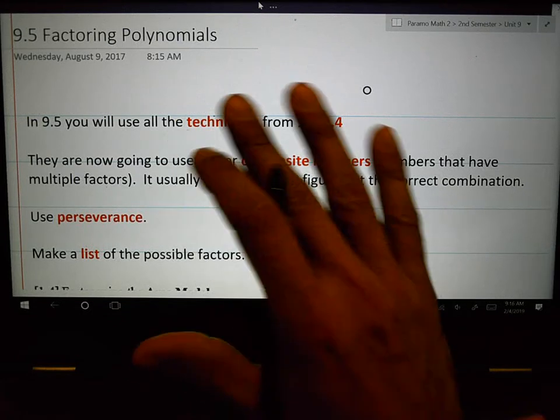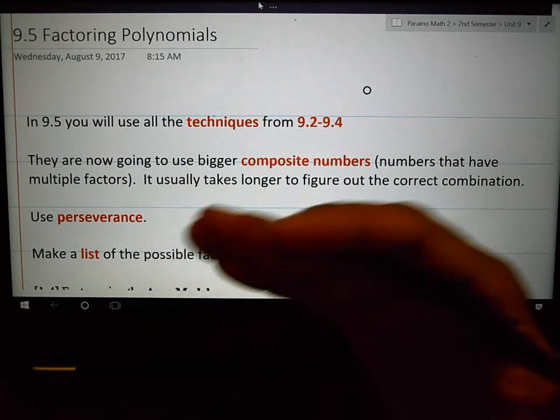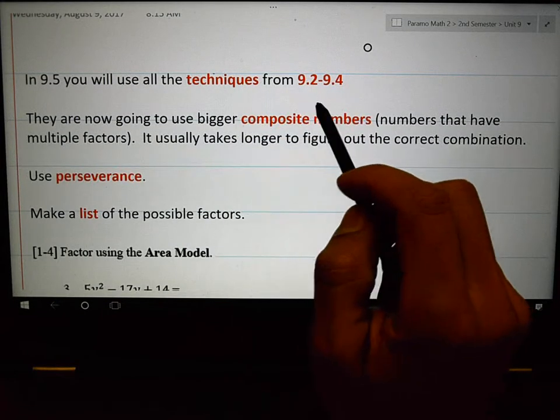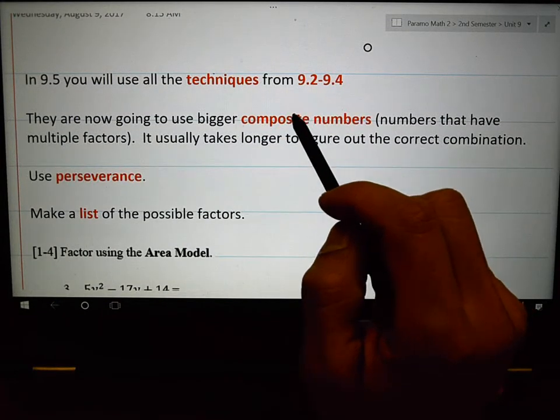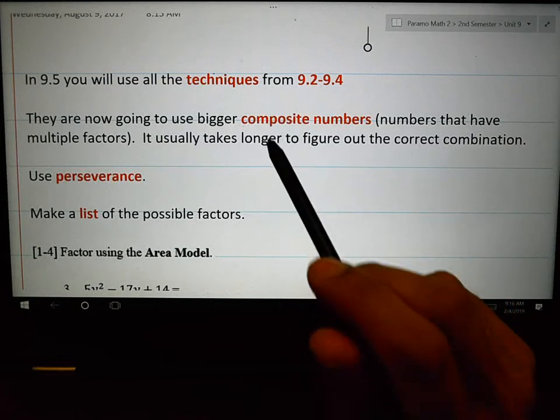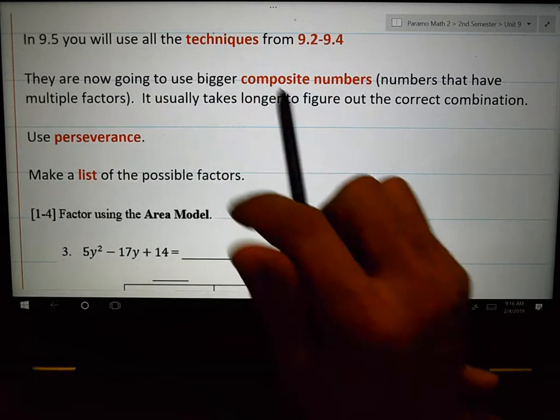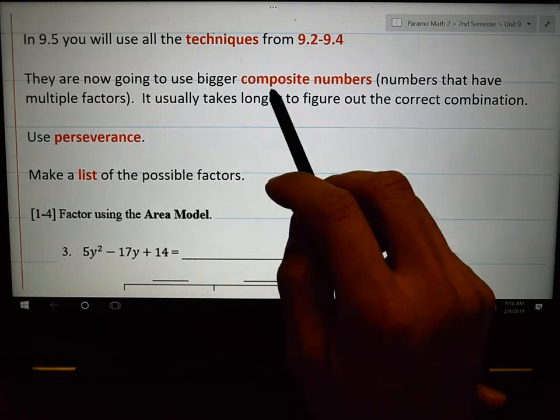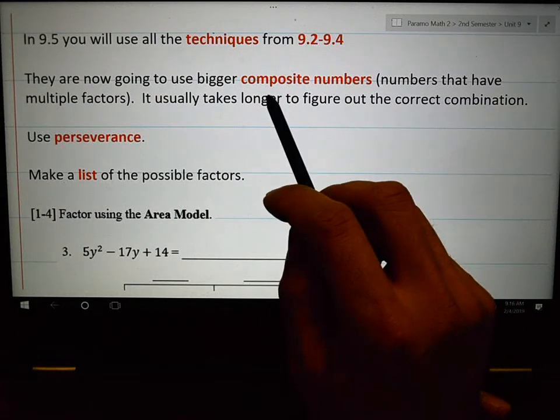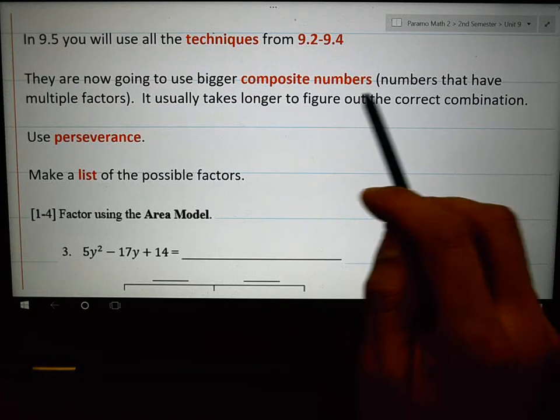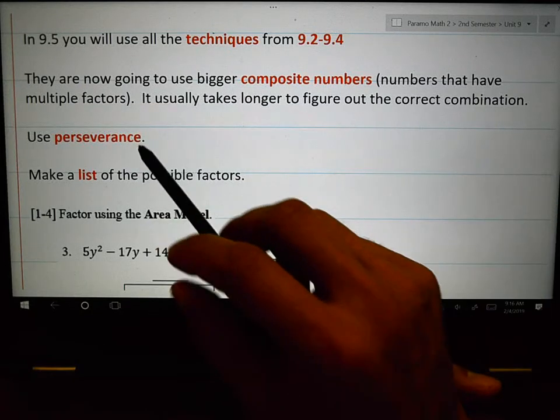In 9.5, there's really not a whole lot of new stuff. You've already learned how to do all the type of factoring that you're going to do. The biggest difference in 9.5 is that the authors decided to use some bigger composite numbers.